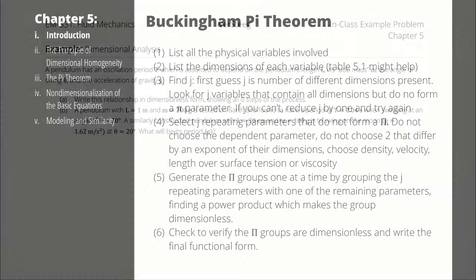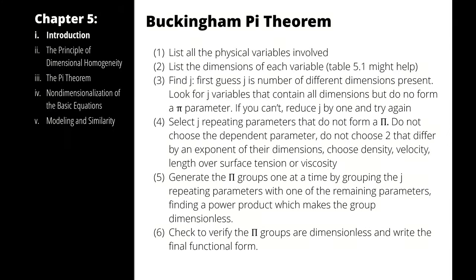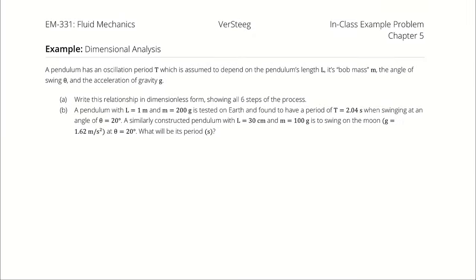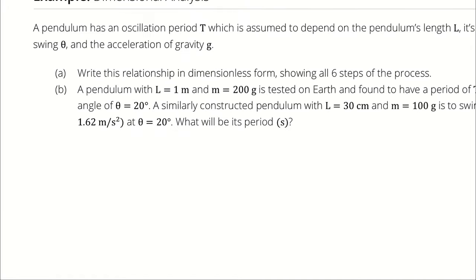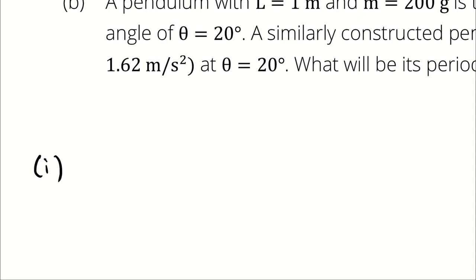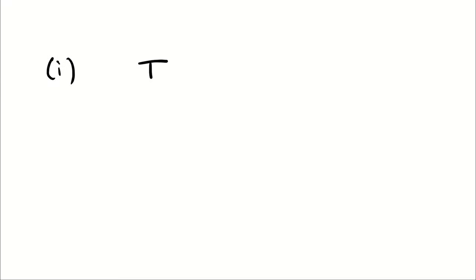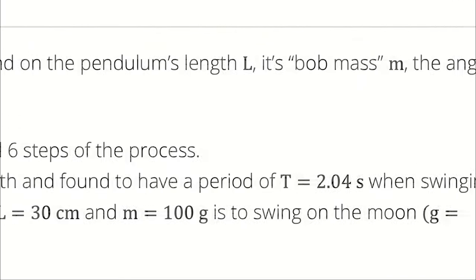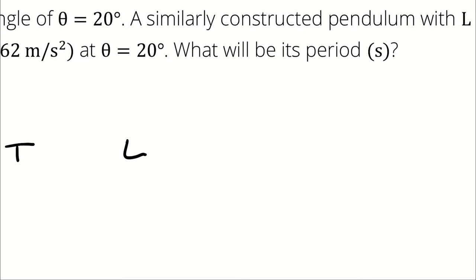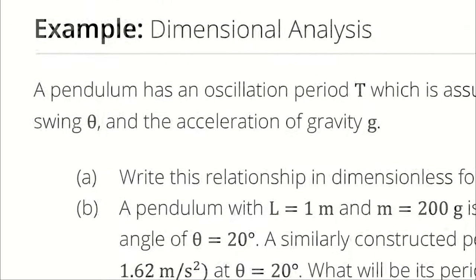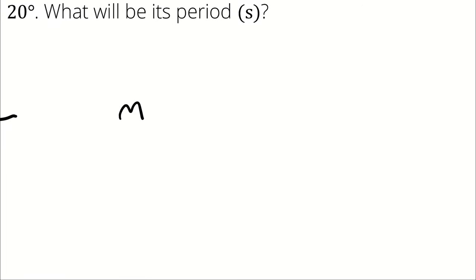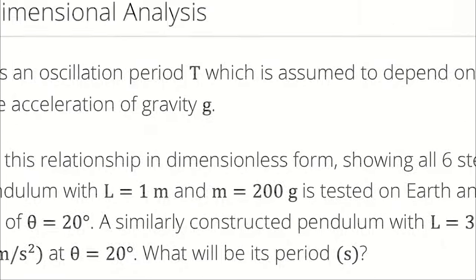Step one of the Buckingham Pi theorem is to list all the physical variables involved: the period of oscillation T, the pendulum's length L, the bob mass M, the angle of swing theta, and the acceleration of gravity g.